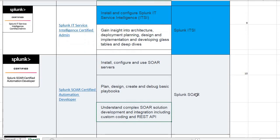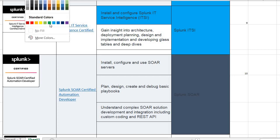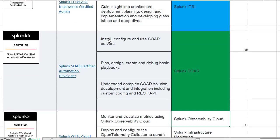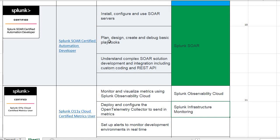Moving to the next one: SOAR Orchestration. SOAR is another important platform. To give you some background, in 2018 — around 6 years ago — Splunk acquired the Phantom software. Phantom is an orchestration tool, and Splunk added that orchestration to its platform. This certification mainly focuses on that orchestration platform and tool. One more thing to note: orchestration is available on-premise as well as on cloud, so both versions are available. Users should check the Splunk documentation for that.